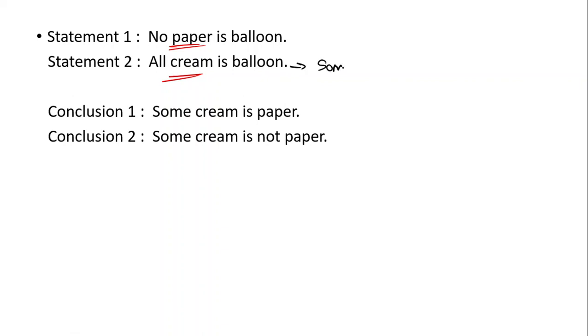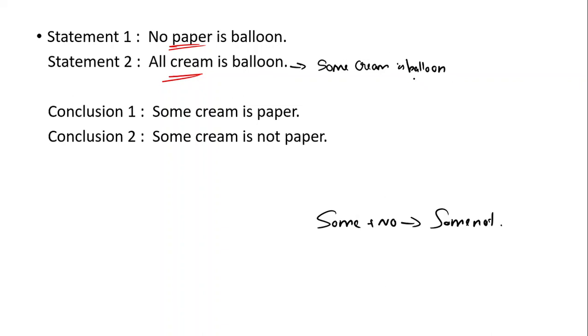Next question: No Paper is Balloon, All Creamy is Balloon. Some Creamy is Paper, some Creamy is not Paper. Creamy is Paper. All plus No is No rule, but some plus No. Let's apply all plus No rule. Some Creamy is Balloon. Some Creamy is No Paper — some Creamy is not Paper. It's reversible.